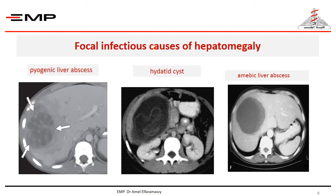Other possible infectious causes of hepatomegaly include pyogenic liver abscess due to Staph aureus infection, amoebic liver abscess occurring with Entamoeba histolytica invasion, and hydatid cyst caused by Echinococcus granulosus. With any of these conditions, non-specific complaints of fever, chills, malaise, and abdominal pain are frequent, in addition to hepatomegaly. You can differentiate between them by lab studies.